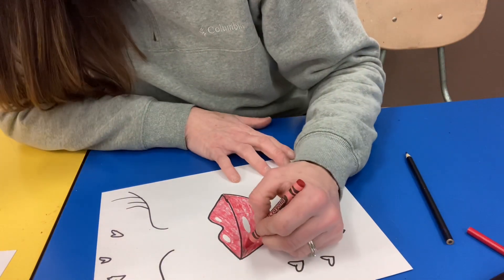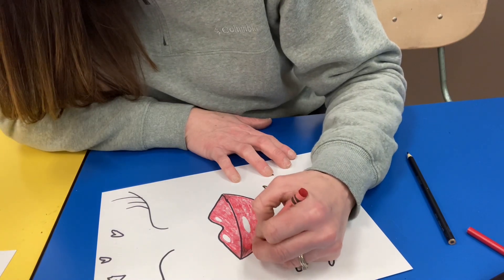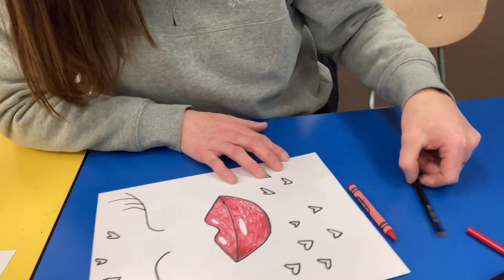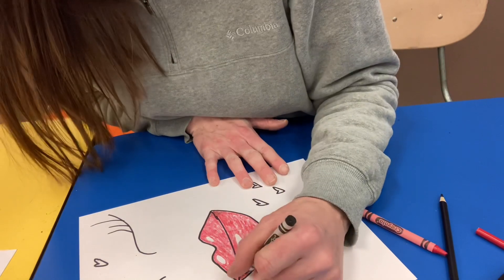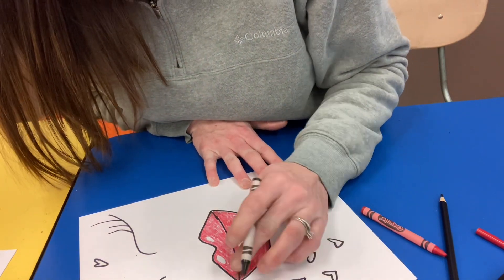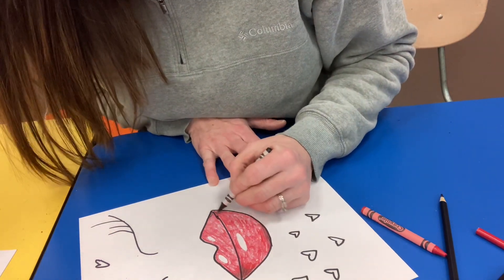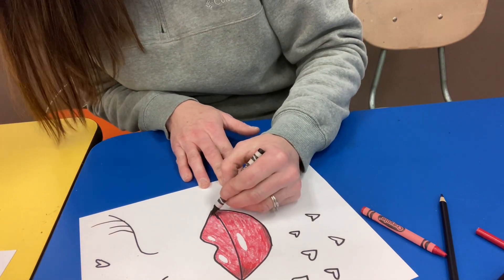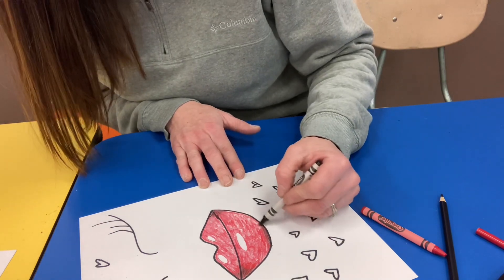So now I'm going to go over it with this red crayon. And even though I'm doing crayon, you can still blend it to where it's not so potently strong.